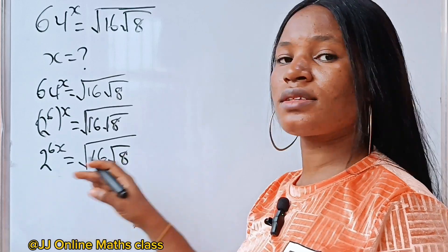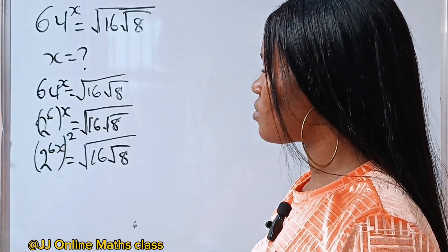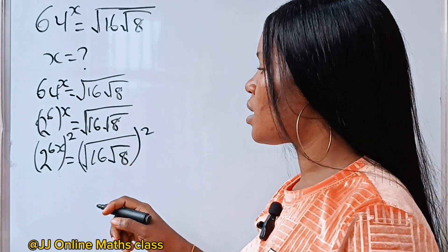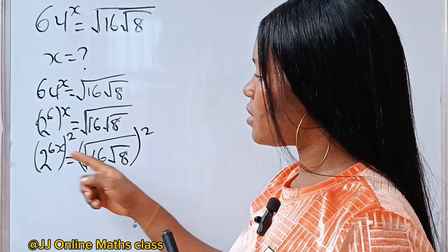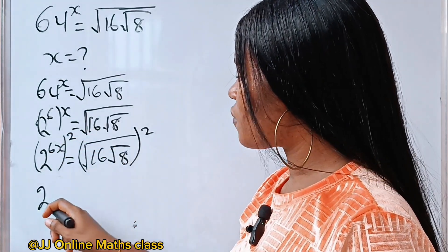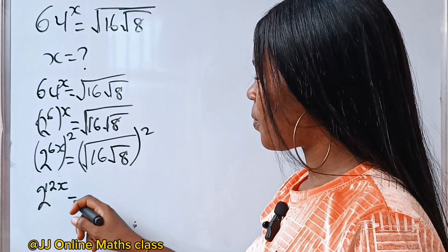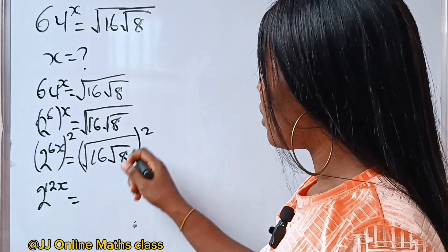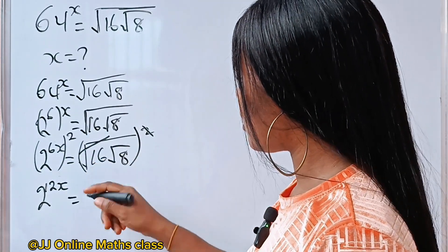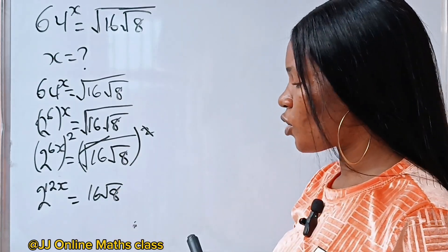Now let's square both sides of this equation. If we do that, we have the whole of this squared is equal to the whole of this squared. Just like I explained, we can write this as 6x times 2, which is 12x. So we have 2 to the power of 12x is equal to — this square cancels this square root — so we have 16 root 8.